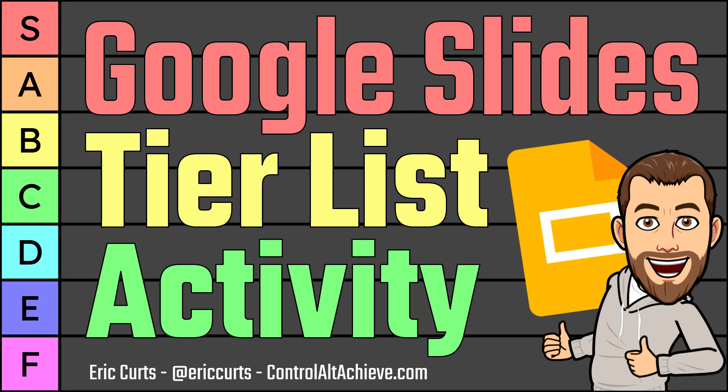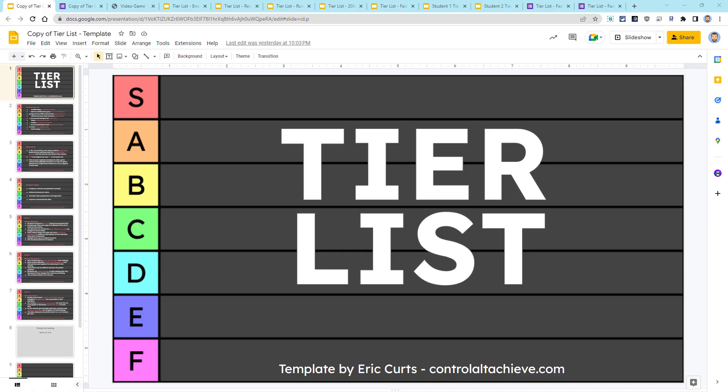Hey, this is Eric, and in this video we're taking a look at an engaging Google Slides activity for students called the Tier List. I'm always looking for ways to engage students in critical thinking and communication. Recently, I've been working on an activity that gets students comparing, contrasting, and prioritizing concepts, as well as defending the rationale for their claims.